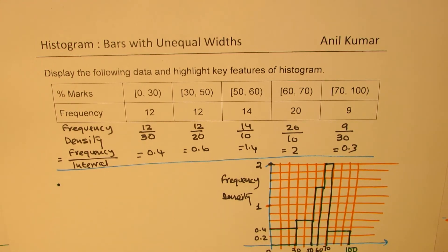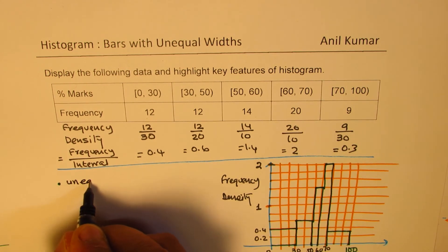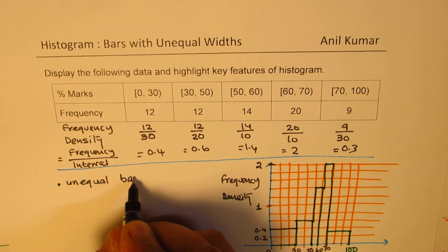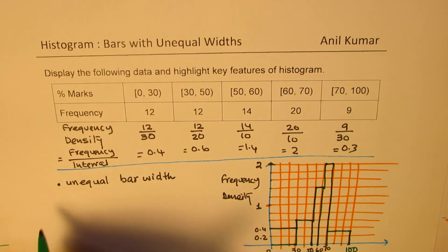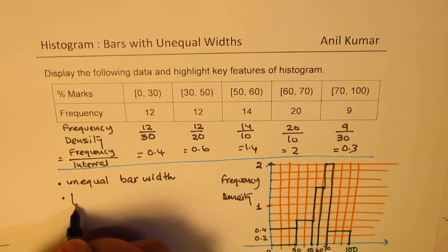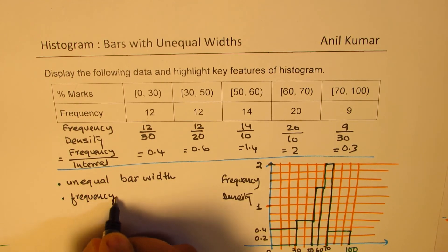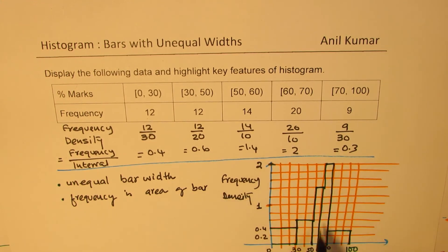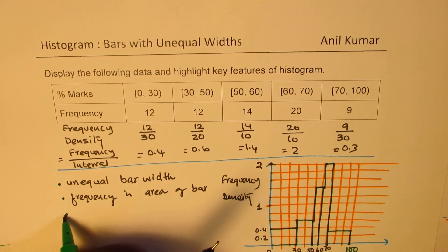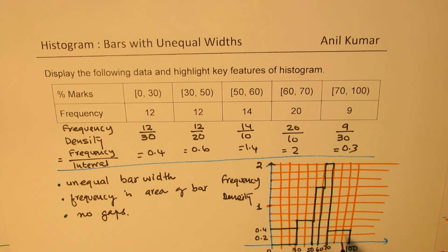What you notice here is that we can have unequal bar widths. Second, frequency is the area of the bar, not the height. Third, it is a continuous data with no gaps and no overlapping of data.